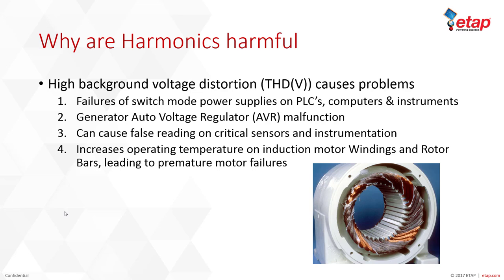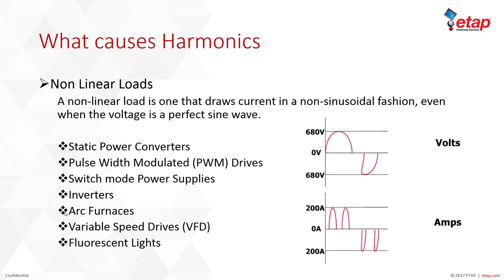What causes harmonics? As mentioned earlier, it's because of nonlinear loads. A nonlinear load is one that draws current in a non-sinusoidal fashion even when the voltage is a perfect sine wave. The illustration shows the voltage sinusoidal wave, and on the bottom, because of the chopping that happens in power electronics, you have the distorted current. Nonlinear loads typically include static power converters and pulse width modulated drives, or PWMs.